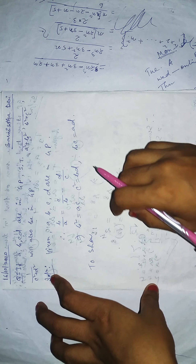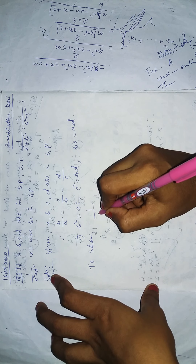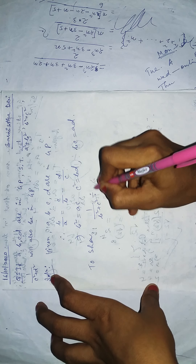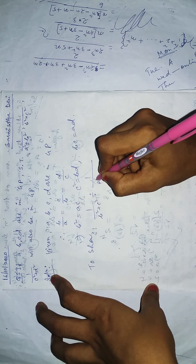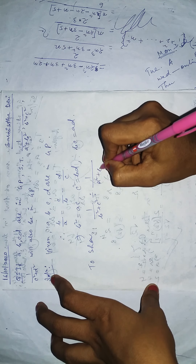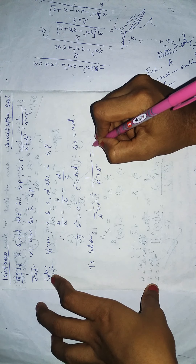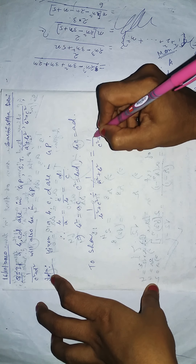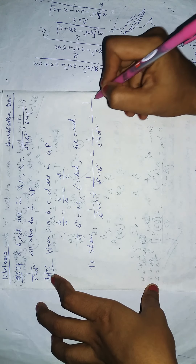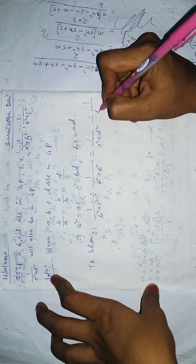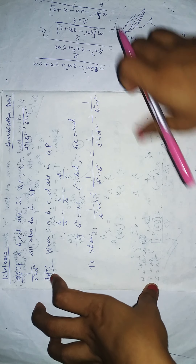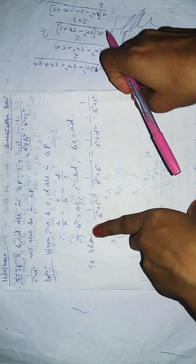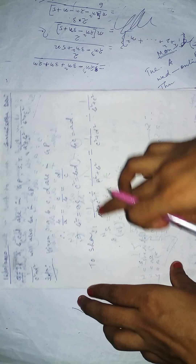Now, to show that the terms are in GP, we need to prove that: [1/(b²+c²)] / [1/(a²+b²)] = [1/(c²+d²)] / [1/(b²+c²)]. If this condition holds, then the three terms are in GP.